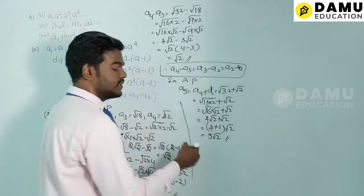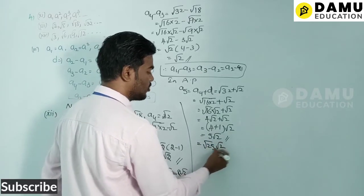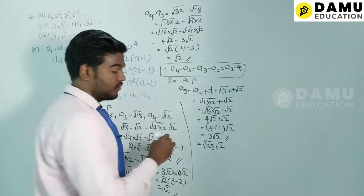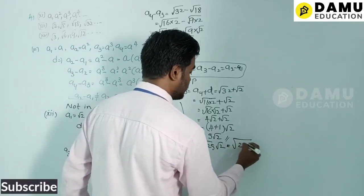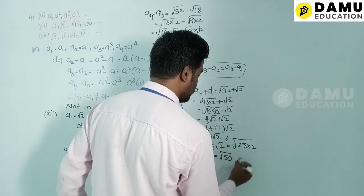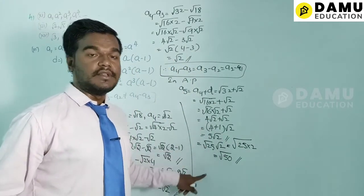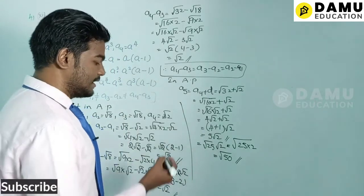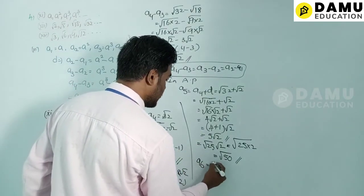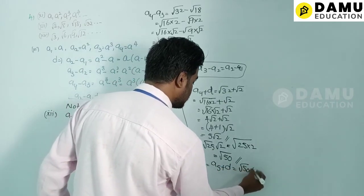We can write 5 as √25, so 5√2 = √(25×2) = √50. This is the value for a5.